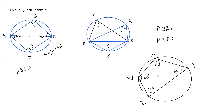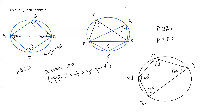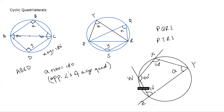The rule for cyclic quadrilaterals is that opposite angles add up to 180 degrees. When giving a reason, you write: 'opposite angles of a cyclic quadrilateral add up to 180 degrees.' Now, suppose we extend the sides of the quadrilateral — extend this line, or this line, or this line.